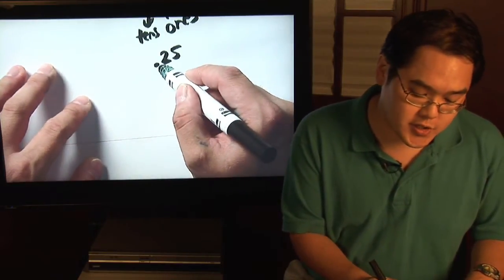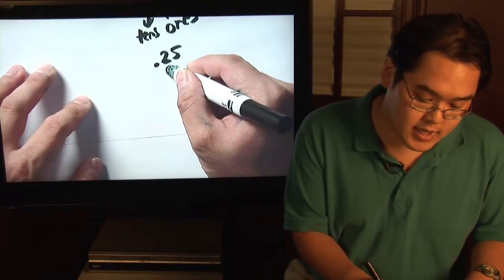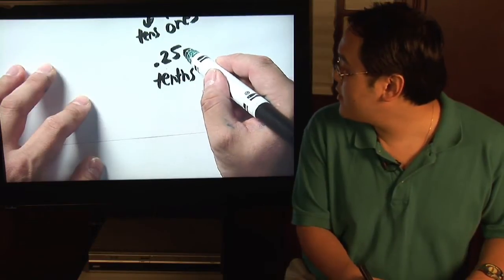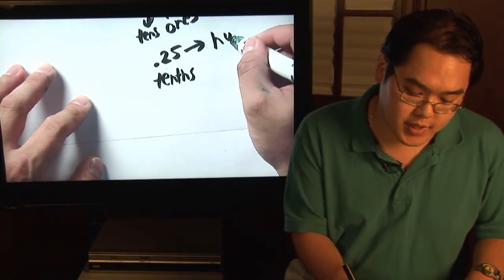So, for example, you can teach them that the first number after the decimal is the tenths place, and then for the five, the second decimal is the hundredths place.